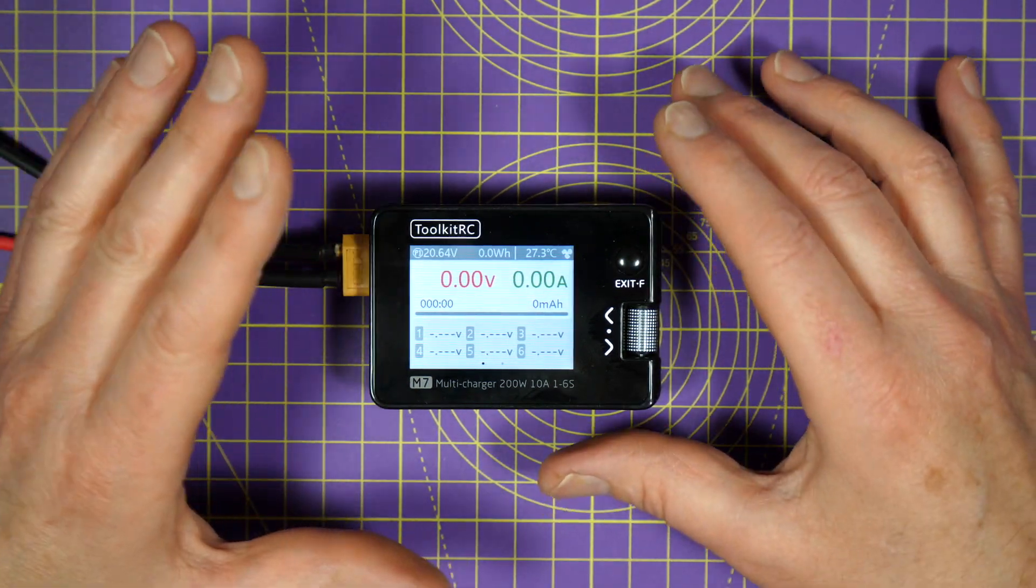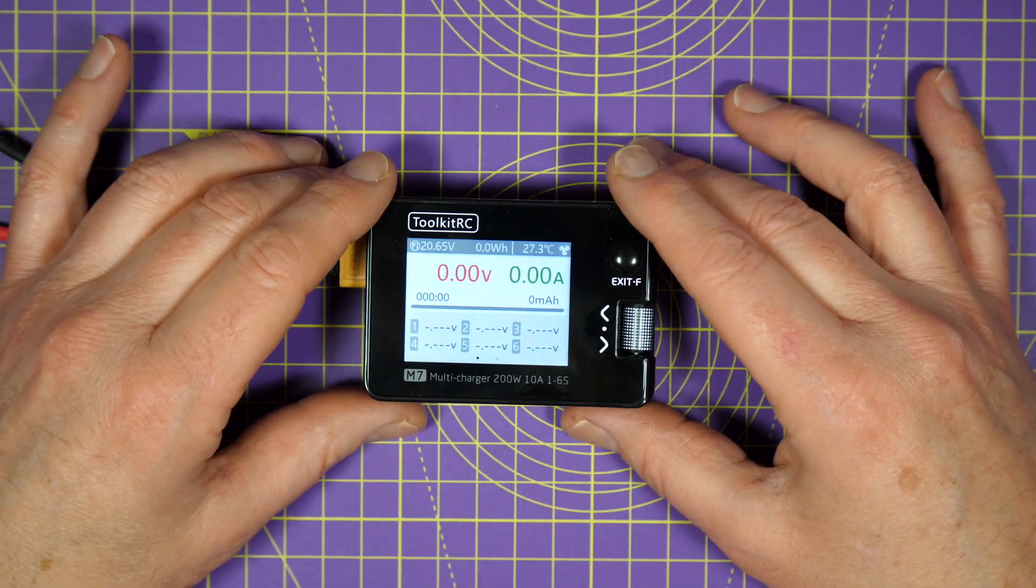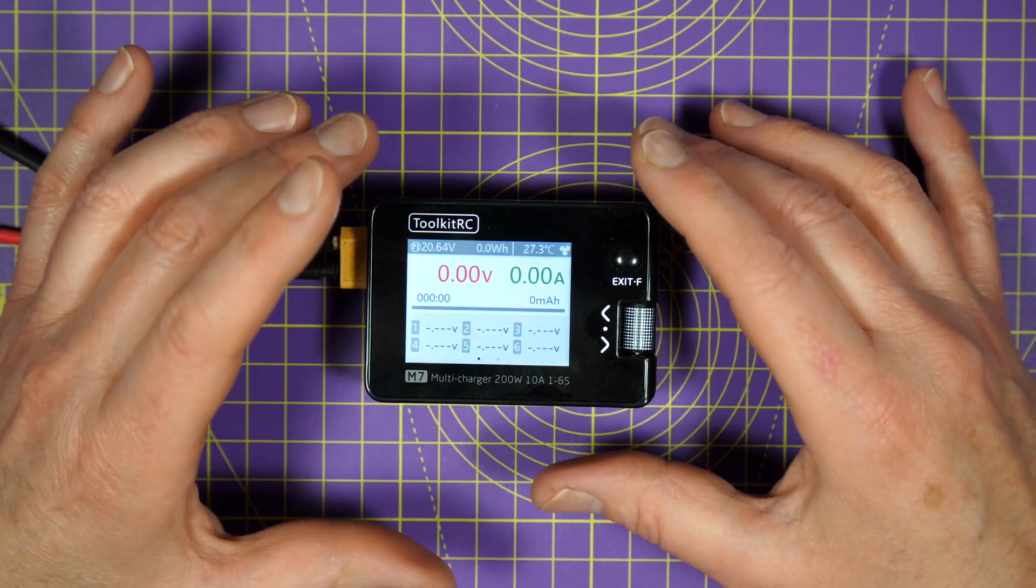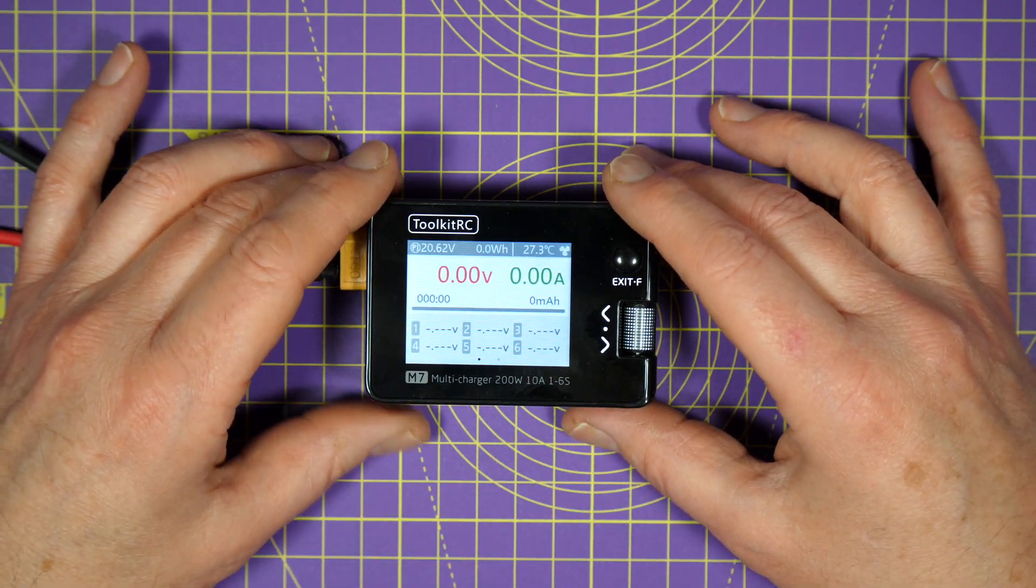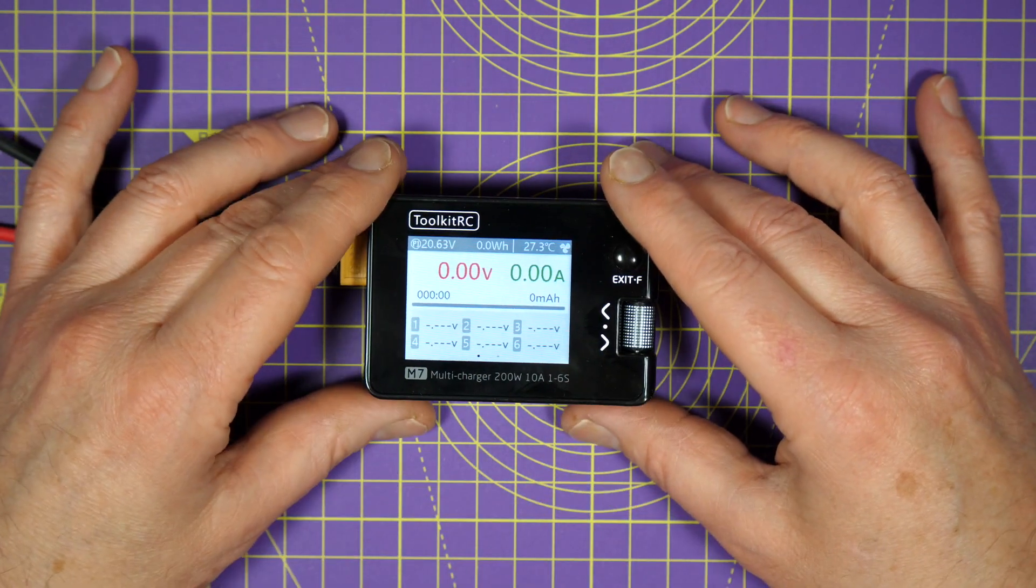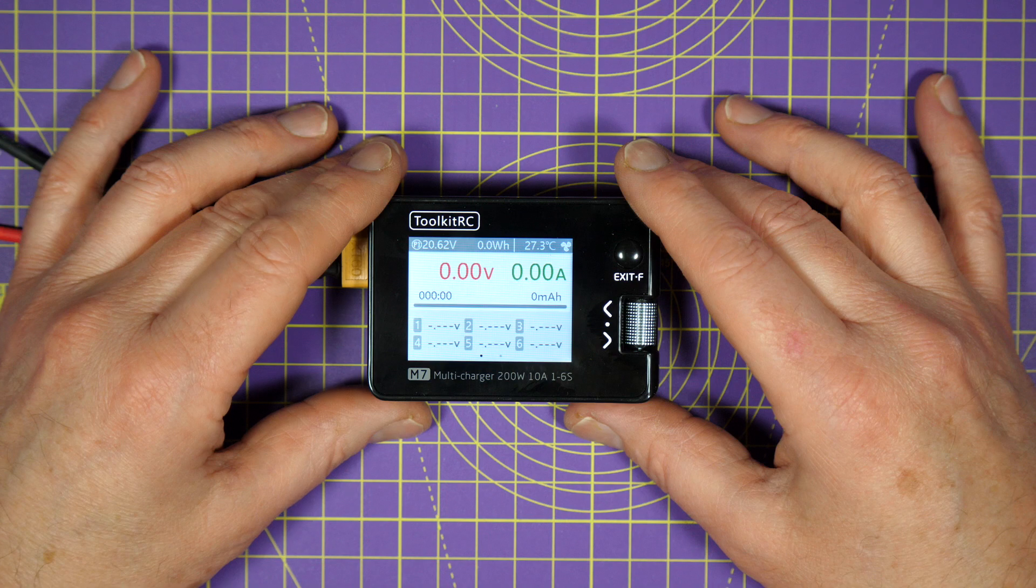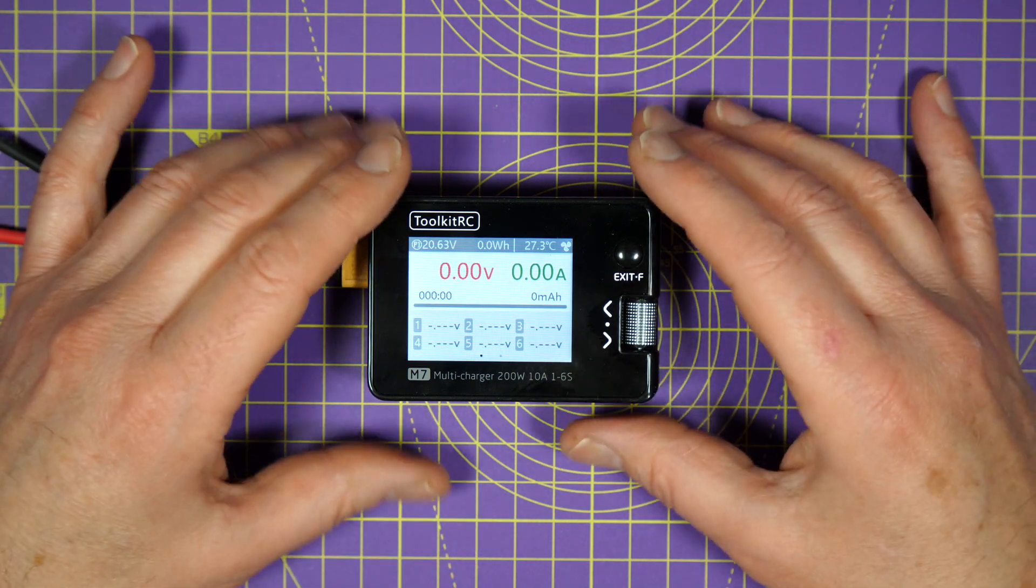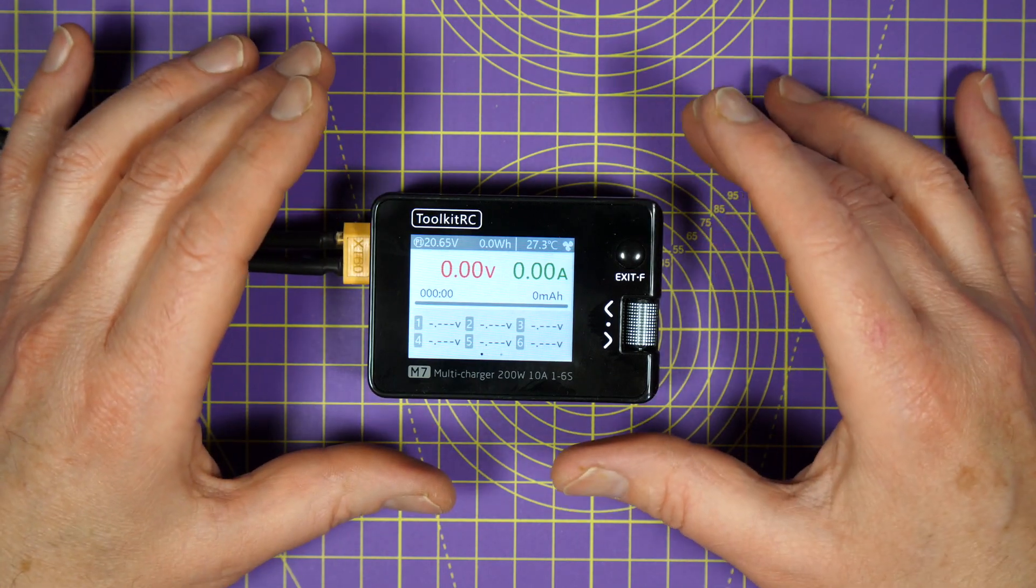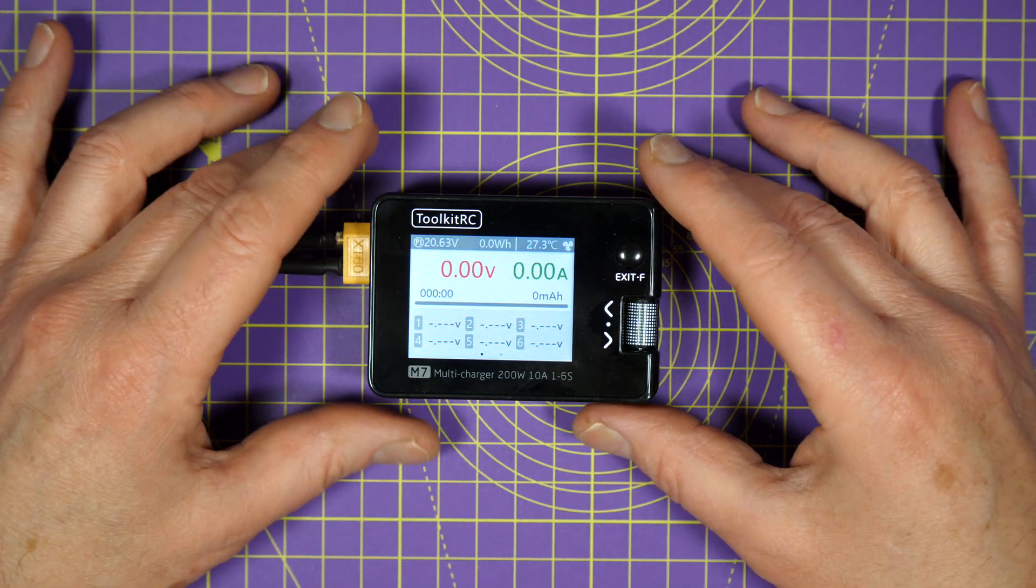When I reviewed the Toolkit RC M6 version 2 charger six months ago, it was clear they'd been listening to their customers and improved the balance port circuit over the V1, making the M6 a very capable and dependable battery charger. You could use it to charge anything, any chemistry up to 6S at 150 watts, and it was very small and made an ideal field charger.